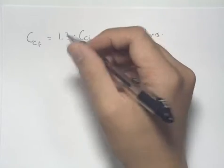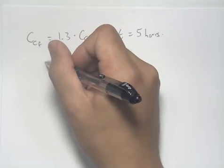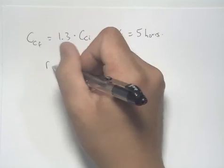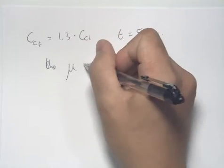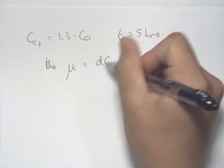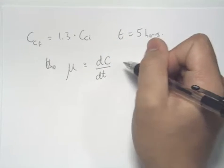And we can integrate, we can perform a balance on the cells or use our equation for specific growth rates, μ, and set that equal to a change in cell concentration by a change in time.